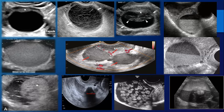We're going to go over this very rapidly. In the first lecture we were mainly concerned about how to find the ovary. Then we discussed the simple ovarian cyst, which was anechoic with posterior enhancement, no septi, no solid components, no vascularity.